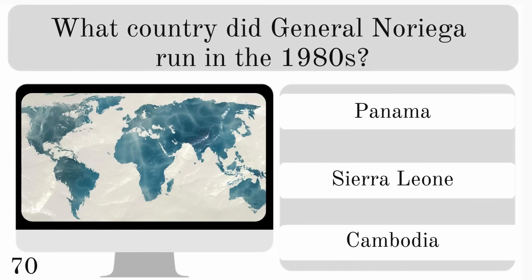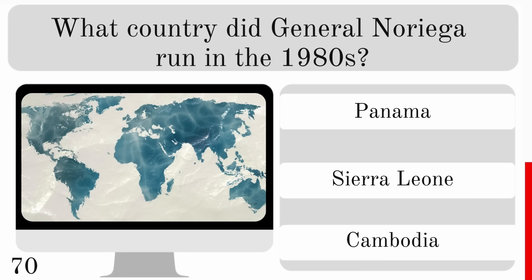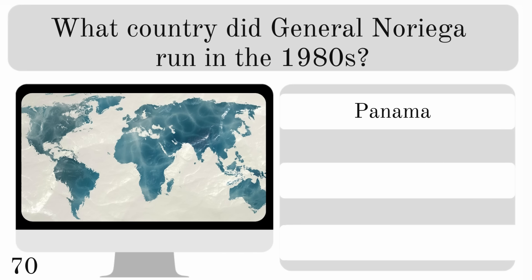What country did General Noriega run in the 1980s? Panama, Sierra Leone or Cambodia? And the answer is Panama.